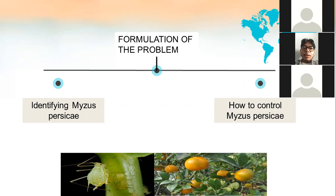The formulation of the problem consists of two parts: identifying Myzus persicae and how to control Myzus persicae.